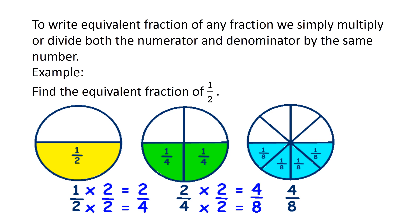To write the equivalent fraction of any fraction, we simply multiply or divide both the numerator and denominator by the same number. For example, find the equivalent fraction of 1 over 2. If we multiply 1 over 2 by 2: 1 times 2 equals 2 and 2 times 2 equals 4, so 1 over 2 equals 2 over 4. If we multiply 2 over 4 by 2: 2 times 2 and 4 times 2 gives 4 over 8. That's why 1 over 2 equals 2 over 4 equals 4 over 8.